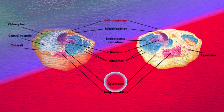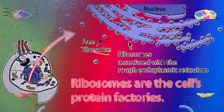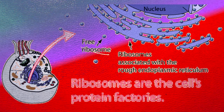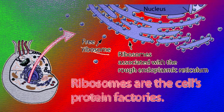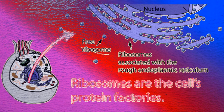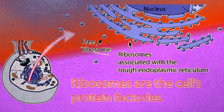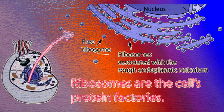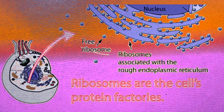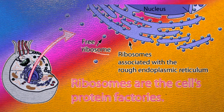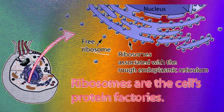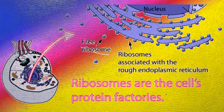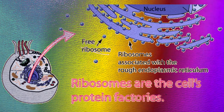Cytoplasm is the fluid that fills the cell. Ribosomes are the protein builders of the cell. When a cell needs to build a protein, it looks for ribosomes. Ribosomes make proteins by putting together chains of amino acids using instructions coded in the cell's DNA. Ribosomes are the smallest organelles; they are suspended freely in the cytoplasm, and some are attached to the ER. Some important proteins made by ribosomes are enzymes, which help speed up biological processes.